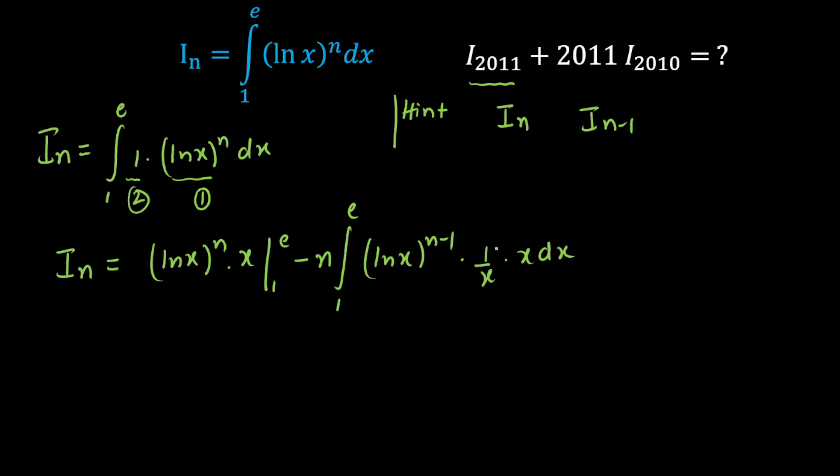So first thing is 1 by x and x will cancel out here and here I am going to put in the first integral, I am going to put the limits here. So I of n will be equal to, when you put e here, ln of e will be equal to 1 and you will get e here. Minus times the moment you put 1 here, ln of 1 will give you 0. So immediately this term will be 0. And here you will get minus times n.